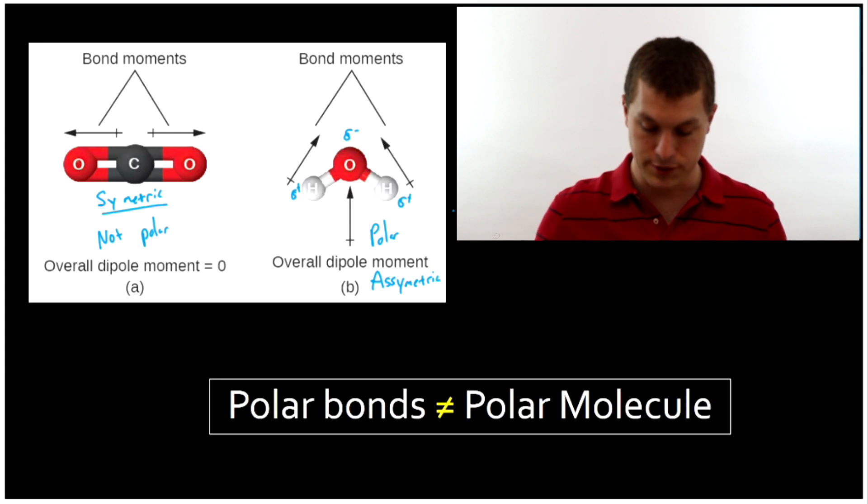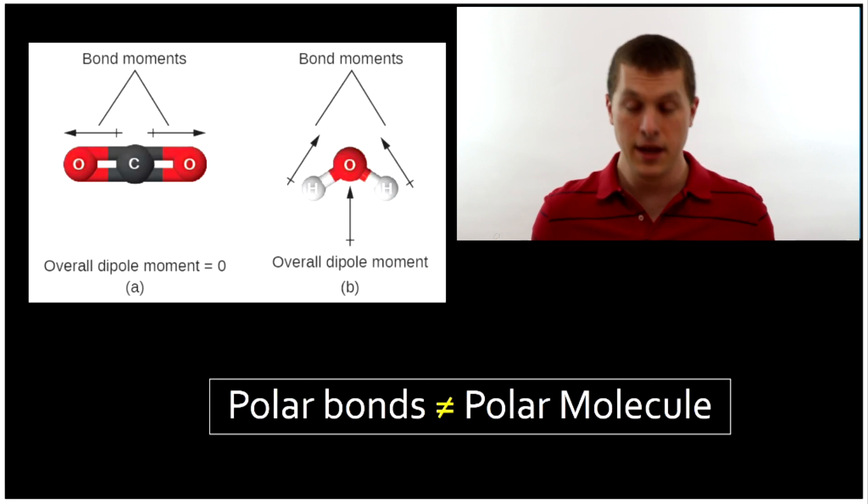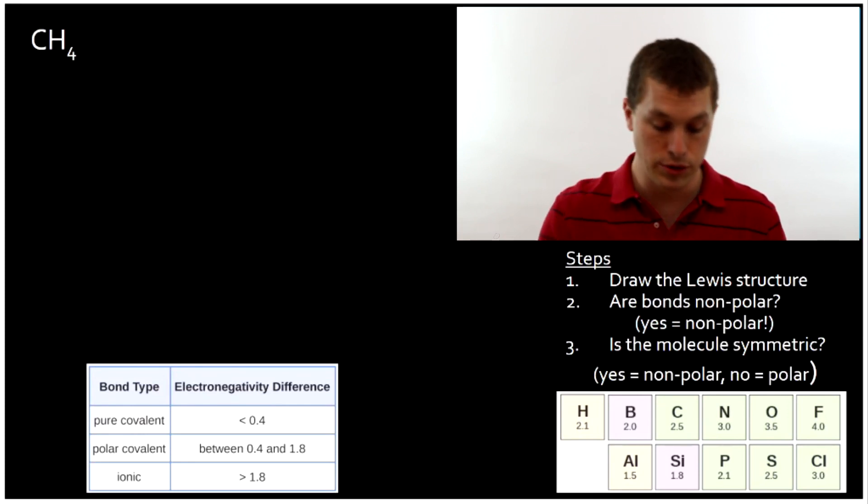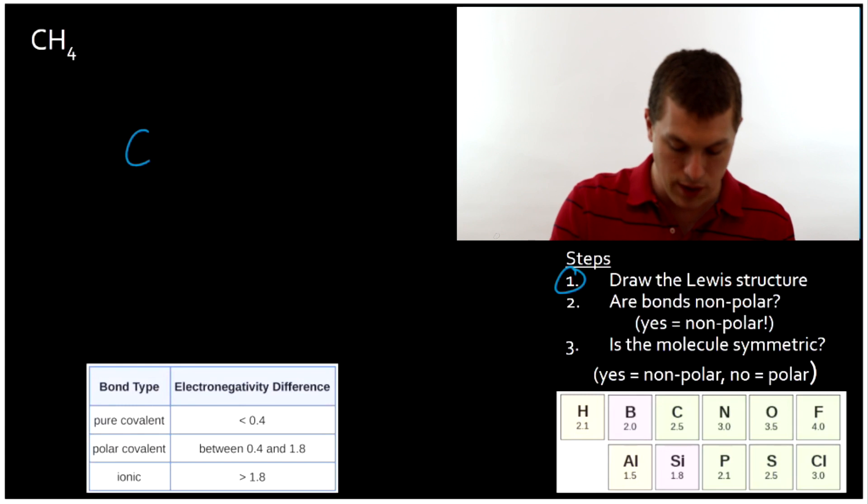So let's take a look at a few examples. What I'm assuming here is that you know how to draw Lewis structures. So if you don't, check out the video I'll link to below to learn how to draw Lewis structures. That's the first thing we need to do when we start our problem. And the Lewis structure for methane, CH4, is this guy.